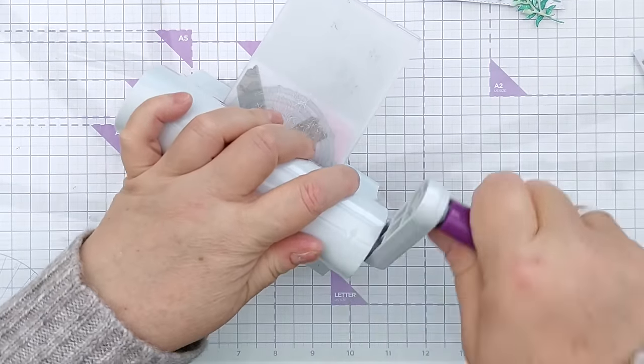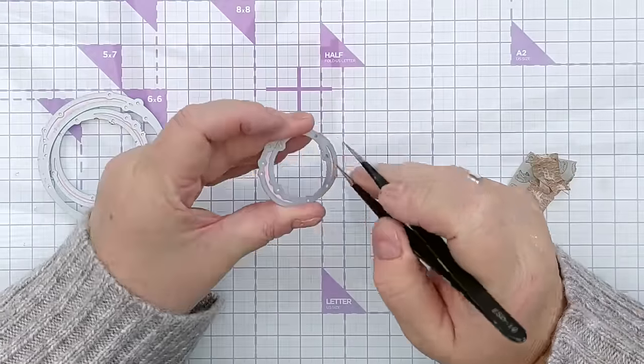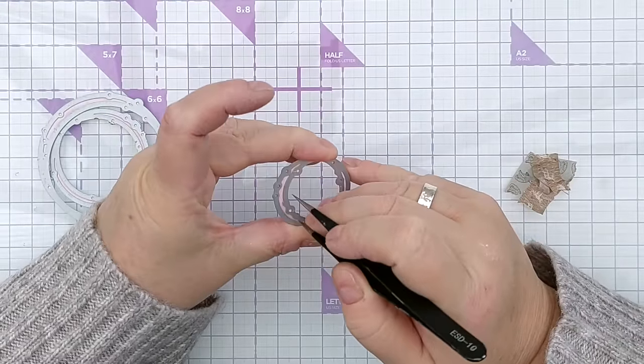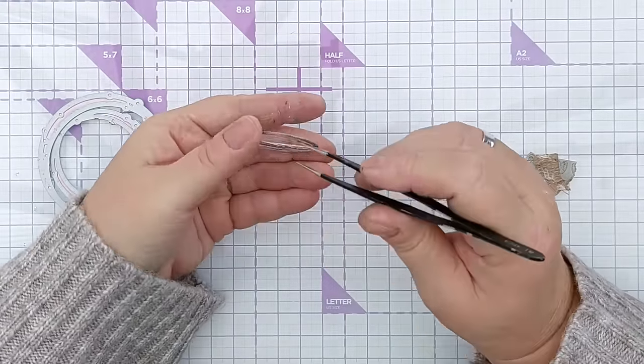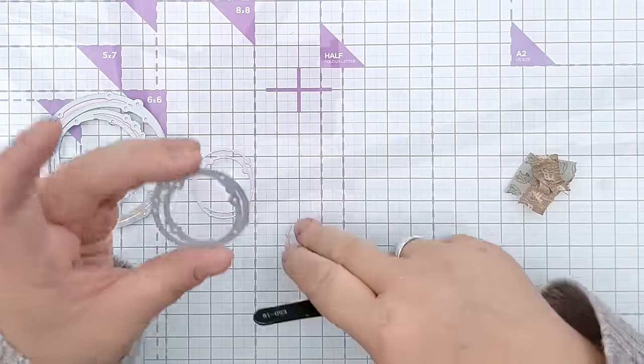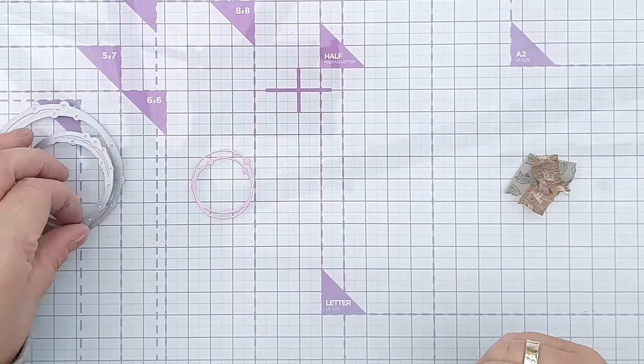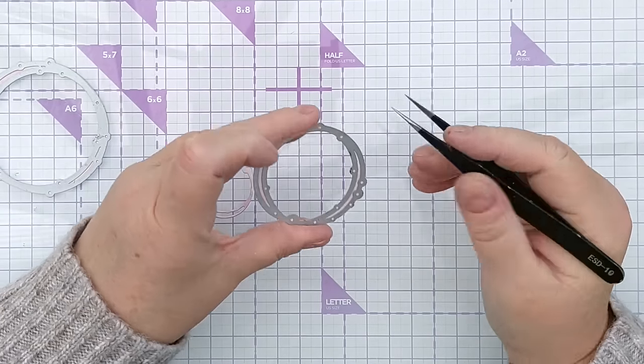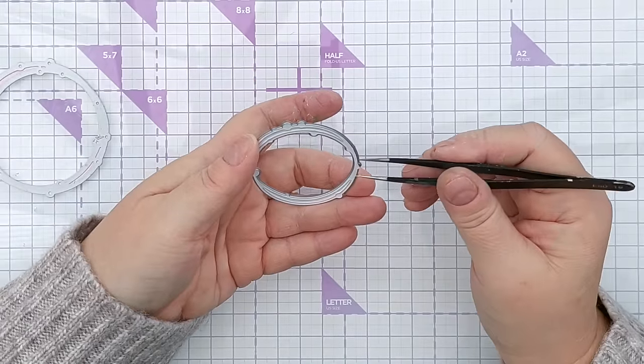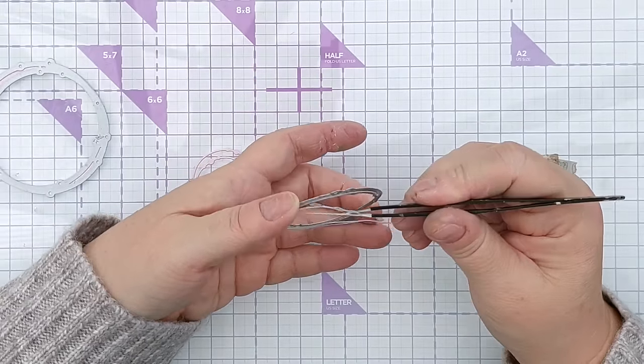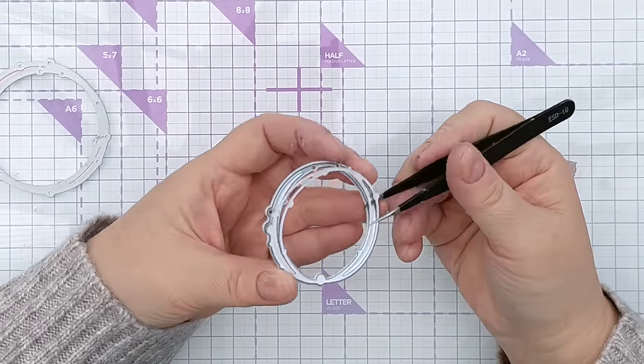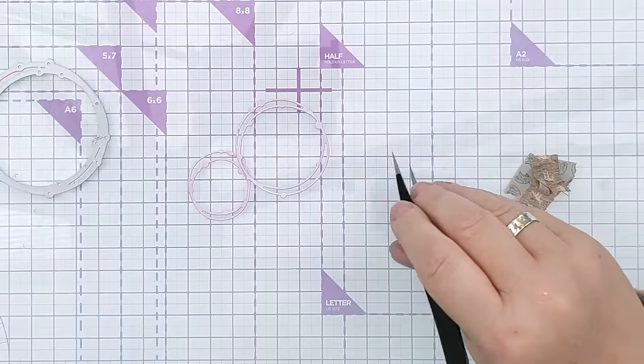A top tip when dealing with fiddly die cuts like this is to very carefully, slowly, gently remove them from the dies. You don't want to rip your die cut, but also if you have quite thin pieces in your die cut you can actually stretch the paper and bend it and warp it if you pull the die cuts out of the dies too roughly.